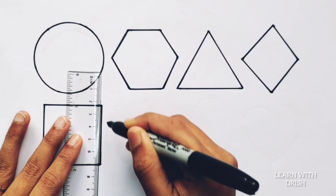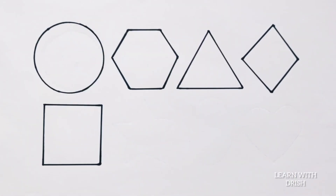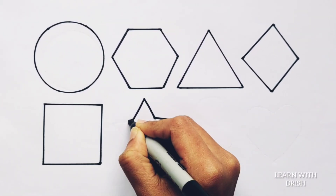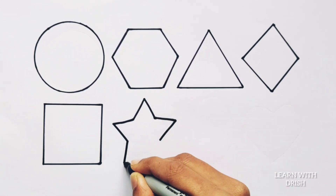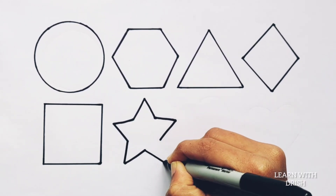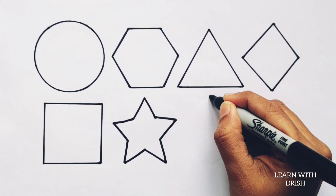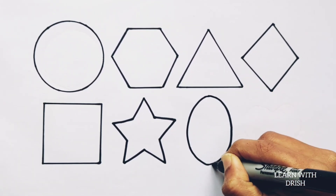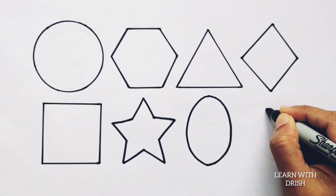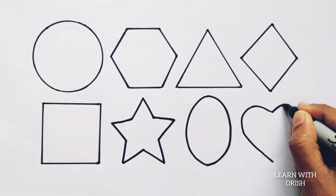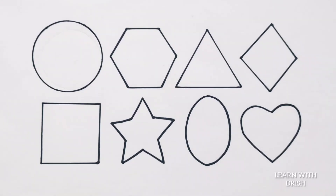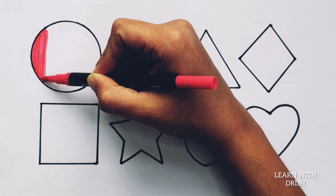Square. Star. Oval. Heart. Square, star, oval, heart. Red color.